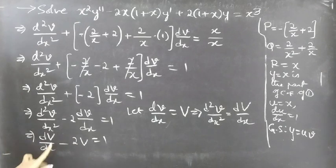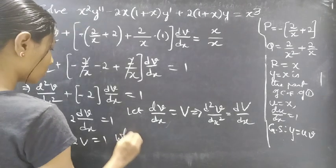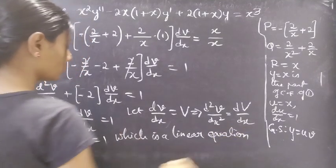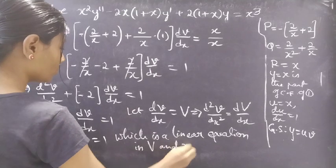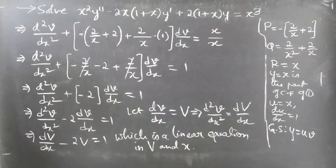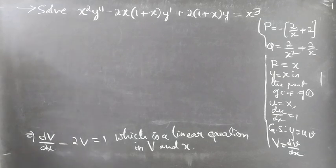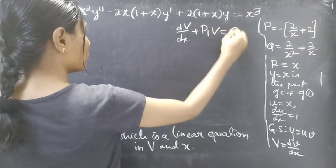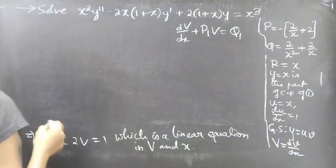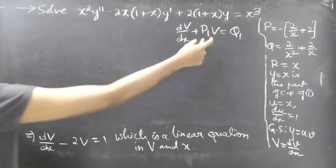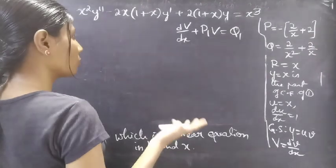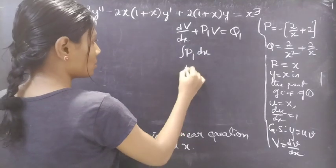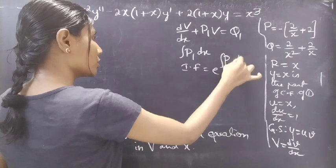This is a linear equation in V and x. Now compare this equation with the standard form of a linear equation: dV by dx plus P1 V equal to Q1. In order to find capital V, we'll use the general solution of the linear equation in V and x. We need to find the integral of P1 dx, and then the integrating factor equal to e to the power of integral P1 dx. Then we go for the general solution of this equation.